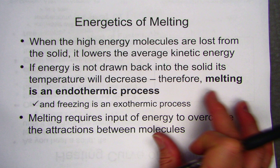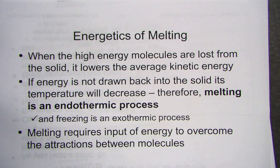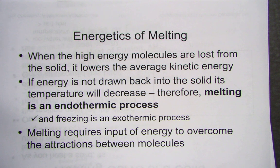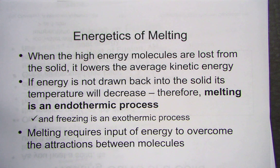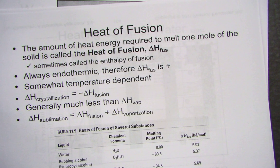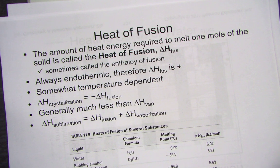There are a lot of energetics we'll end up calculating. When high energy molecules are lost from a solid, it lowers the average kinetic energy, and if energy is not drawn back in, its temperature will decrease. Therefore, melting is an endothermic process and freezing is an exothermic process. We have to input energy to cause a solid to melt, and we release energy to make a liquid turn back to a solid. Melting requires input to overcome the intermolecular forces, and this energy is known as the heat of fusion.